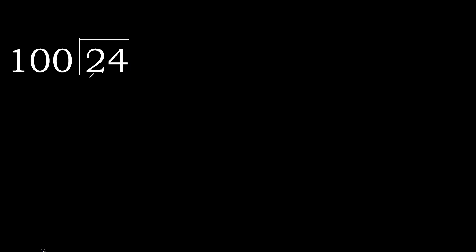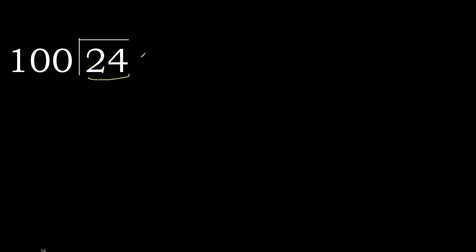24 divided by 100. 2 is less, therefore next. 24 is less, therefore next. There is no number, therefore complete. Always complete with 0. Here: 0 point.